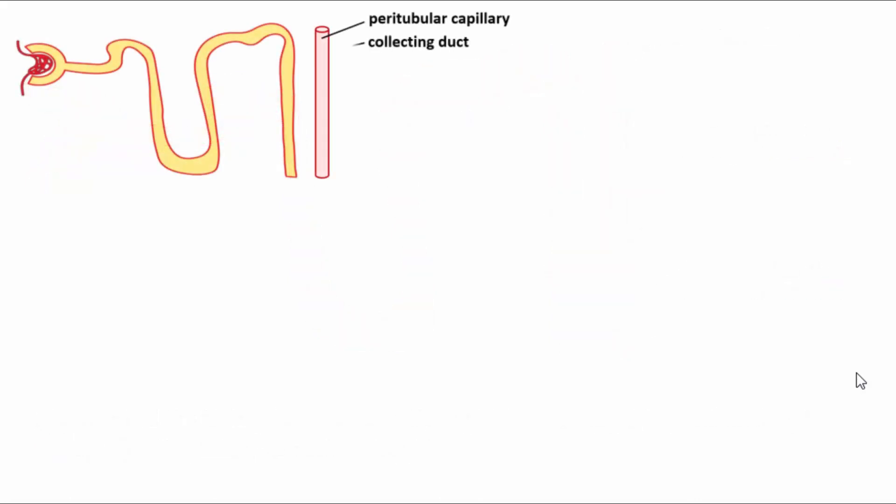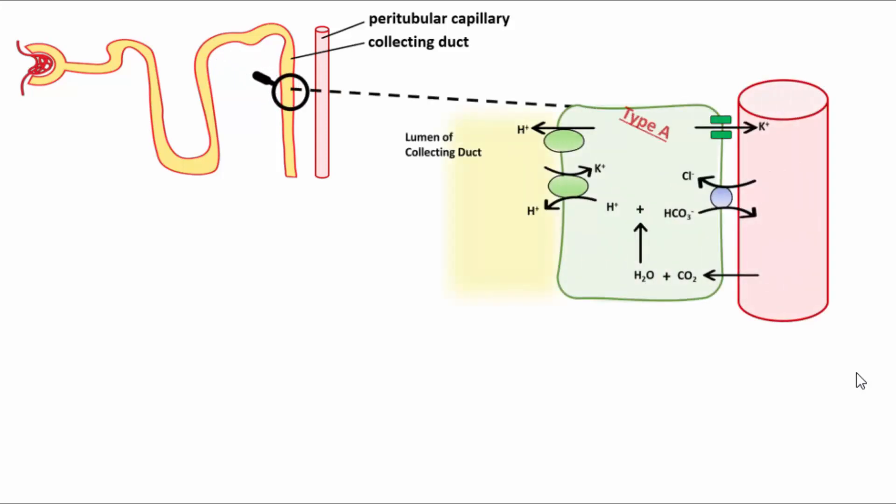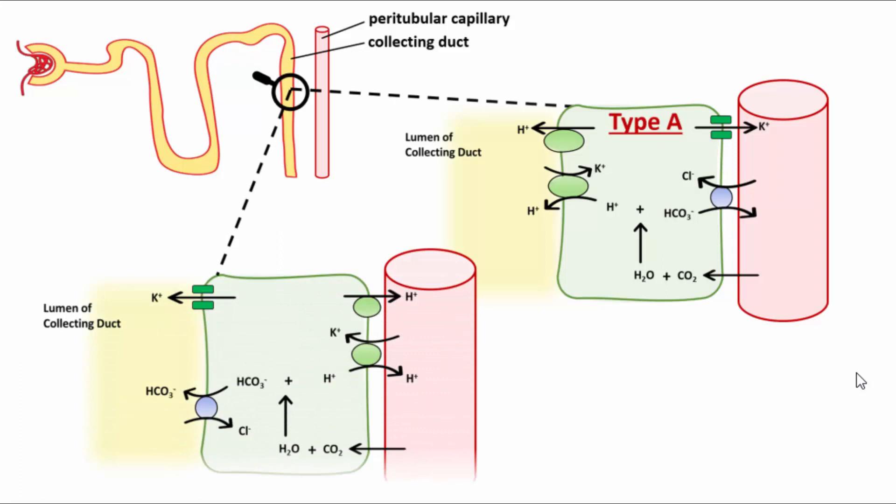In the collecting ducts of the nephrons there are two types of cells involved in regulating acid-base balance, designated as type A and type B intercalated cells.